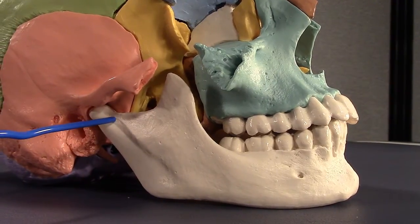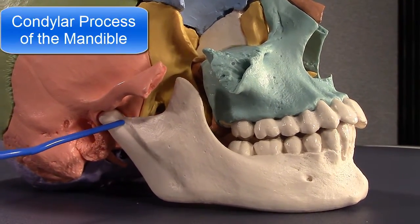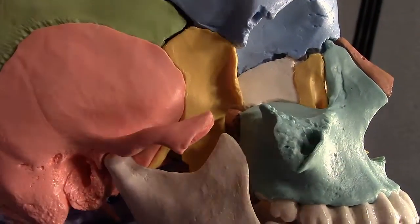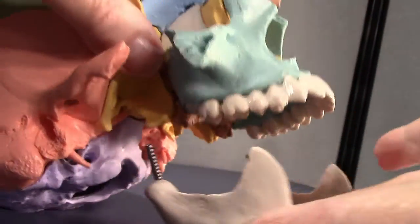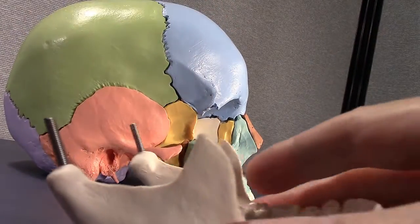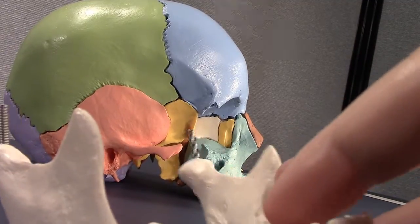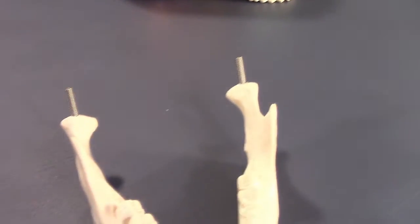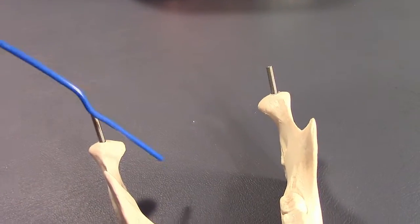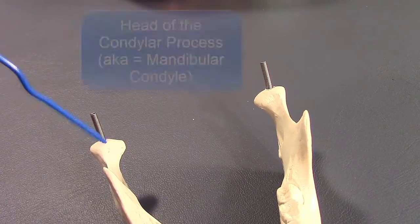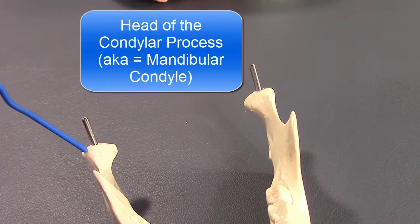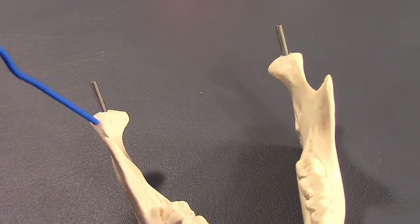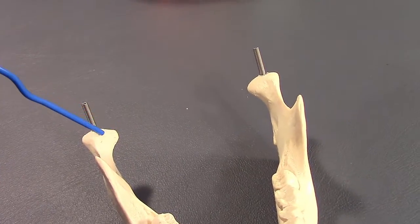And then we have the condylar process back here. This is actually the neck of the condylar process. Let's go ahead and pull this out and take a look a little closer. This is going to be important for the temporomandibular joint. Now you can see this is all the head of the condylar process. Some call it the mandibular condyle as well. It fits into the mandibular fossa, and in the sixth quarter we are going to really hit this hard — you're going to learn all about TMJ disorders.